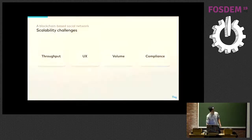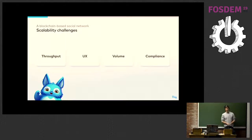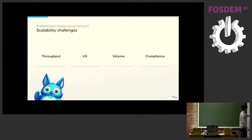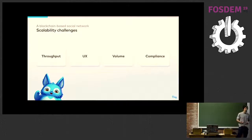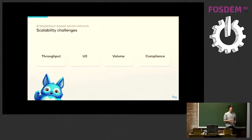We decided to embark on this journey of creating a social network on the blockchain. But we were faced with four key challenges. The first one was about throughput — how do you deal with the huge amount of transactions when you have thousands of users all interacting at the same time? We know today that Ethereum scales with up to 20 to 30 transactions per second, which will not be enough for our use case.